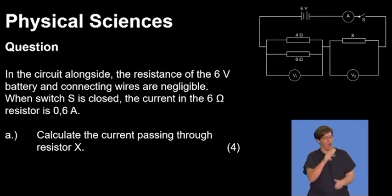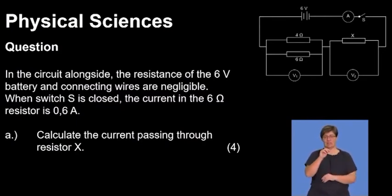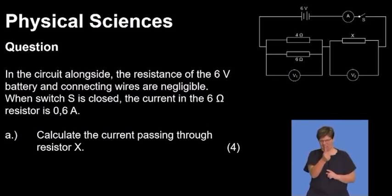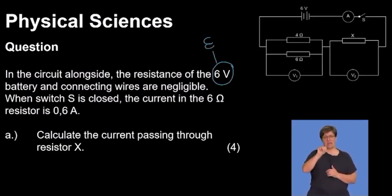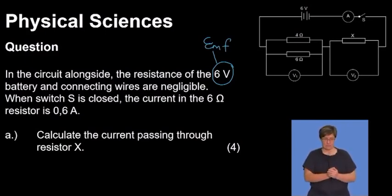Now let's look at the last question, which says: in the circuit alongside, the resistance of the six volt battery and the connecting wires are negligible. So it means that this six volts is actually the EMF of the battery. Because we are saying that the battery has negligible resistance, it doesn't offer any resistance to the current flow. Switch S is closed.